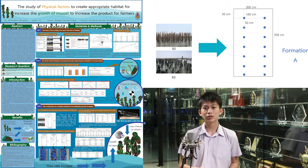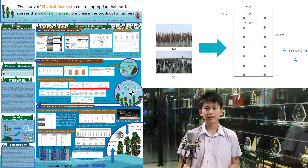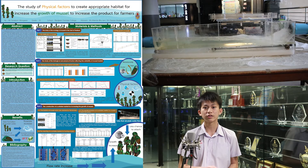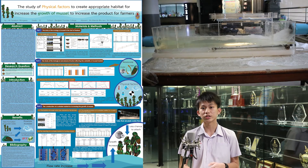So, I would like to know if there is any better formation than Formation A to improve the growth of mussels. I then applied it to create alternative formations of mussel poles — Formation B, C, and D. I created a mussel pole model and a tube that can simulate water flow, and then I tested these four formations in the tube.